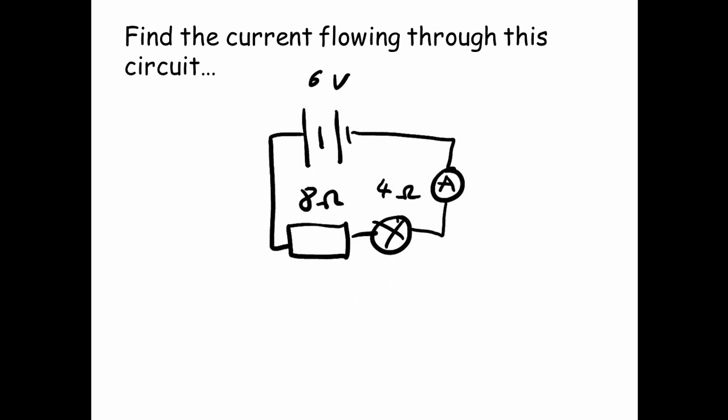Find the current flowing through this circuit. Firstly we need to add up the total resistance. So 8 plus 4, that gives us 12 ohms. V divided by R equals I, which is 6 divided by 12, which is 0.5 amps.